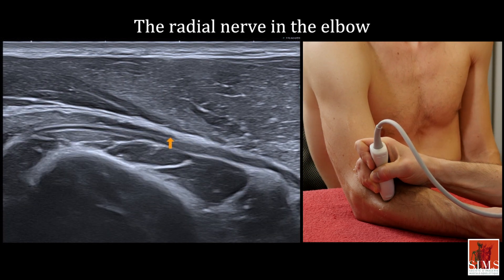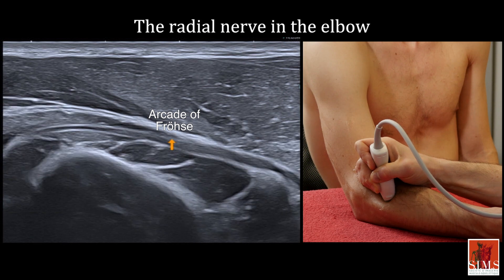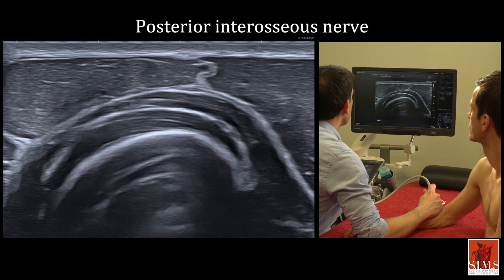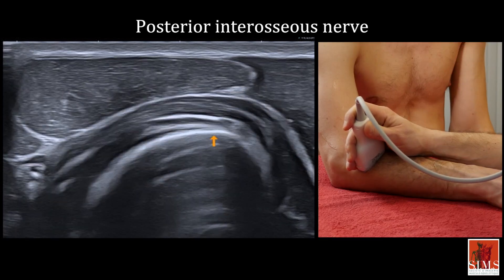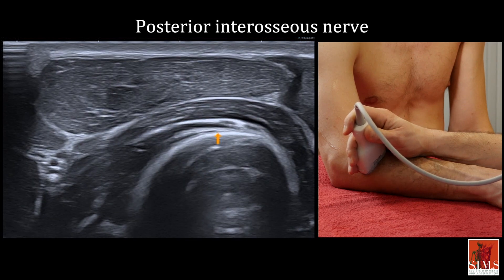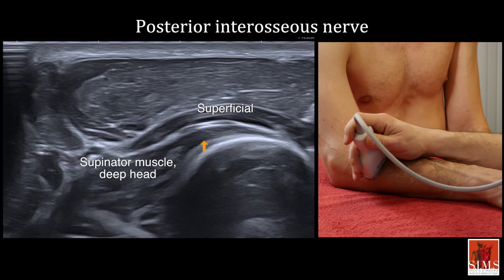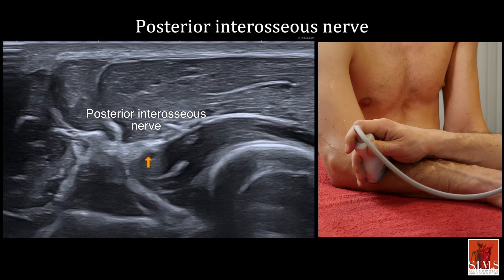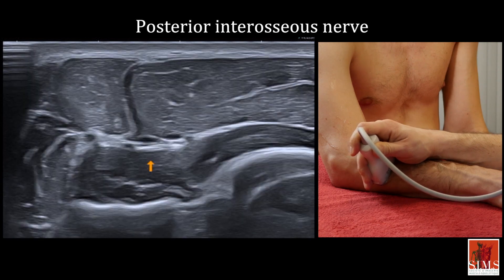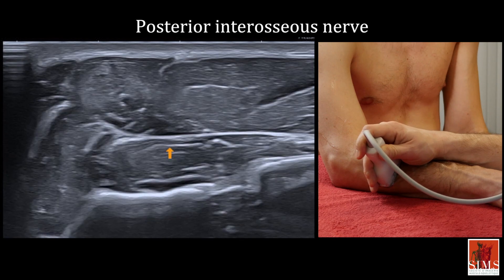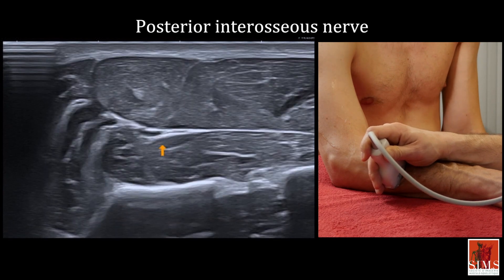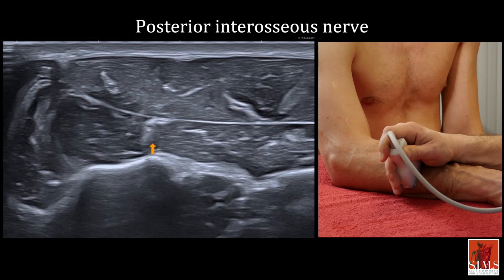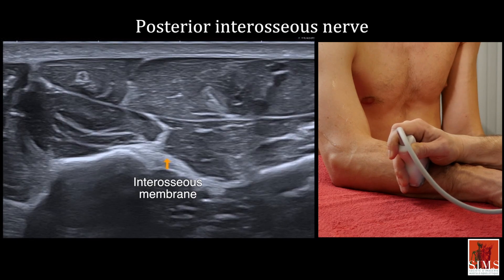This structure, which is fibrous in some and membranous in others, is called the arcade of Froese and can potentially compress the radial nerve. After going around the neck of the radius, the deep branch of the radial nerve, still located between the two heads of the supinator, arrives in the posterior compartment of the forearm and becomes the posterior interosseous nerve. It is very clearly visible here, between the extensor pollicis longus and the abductor pollicis longus, then it plunges deep to the interosseous membrane.